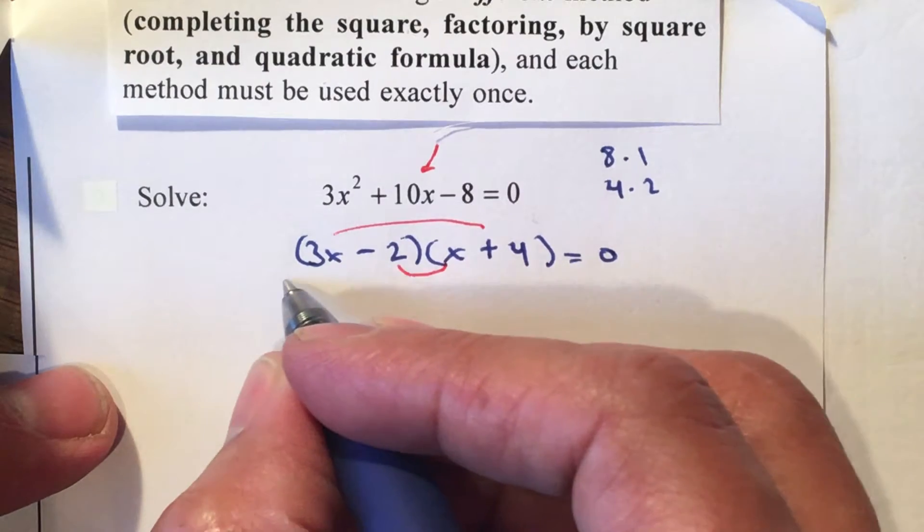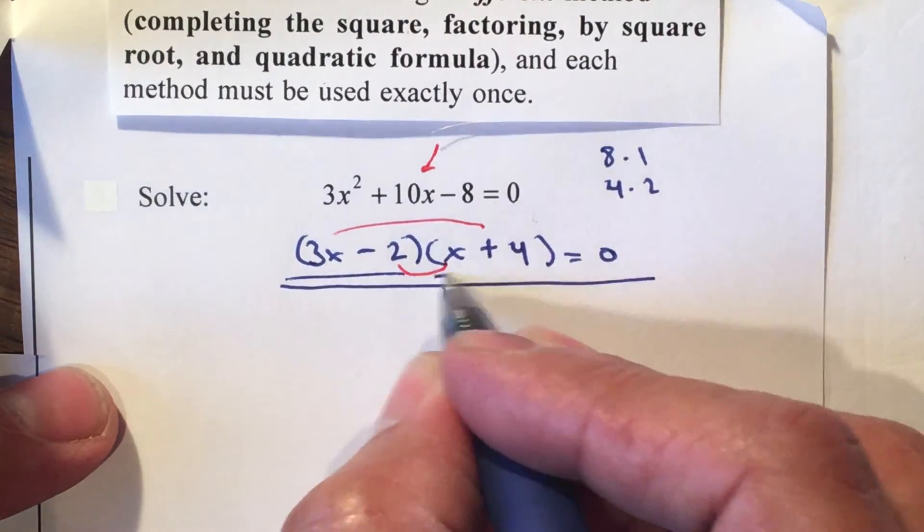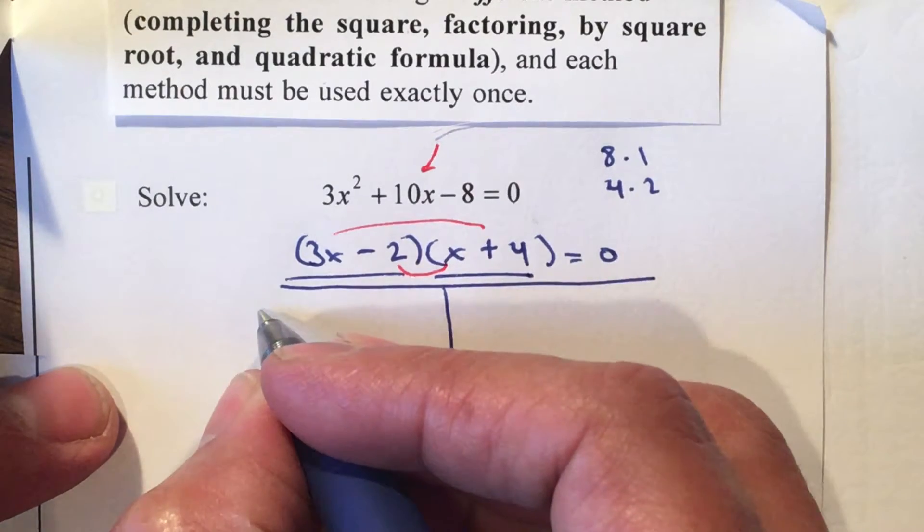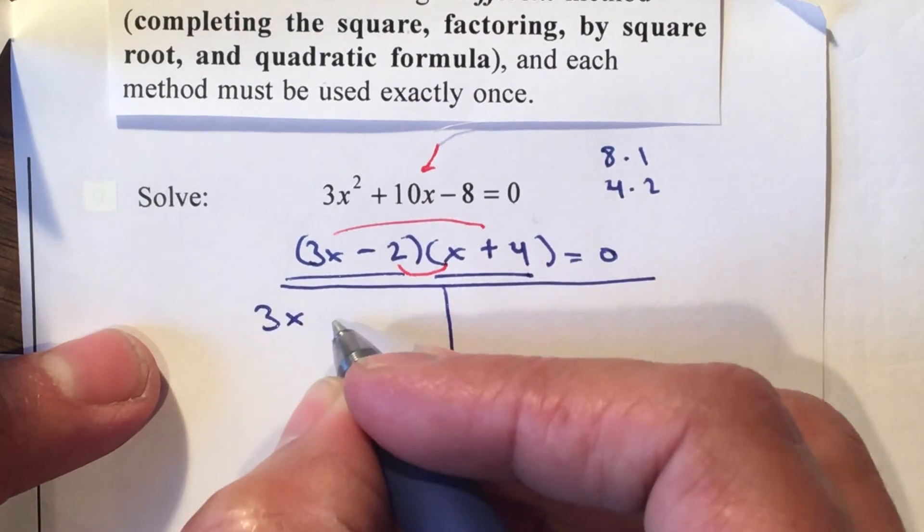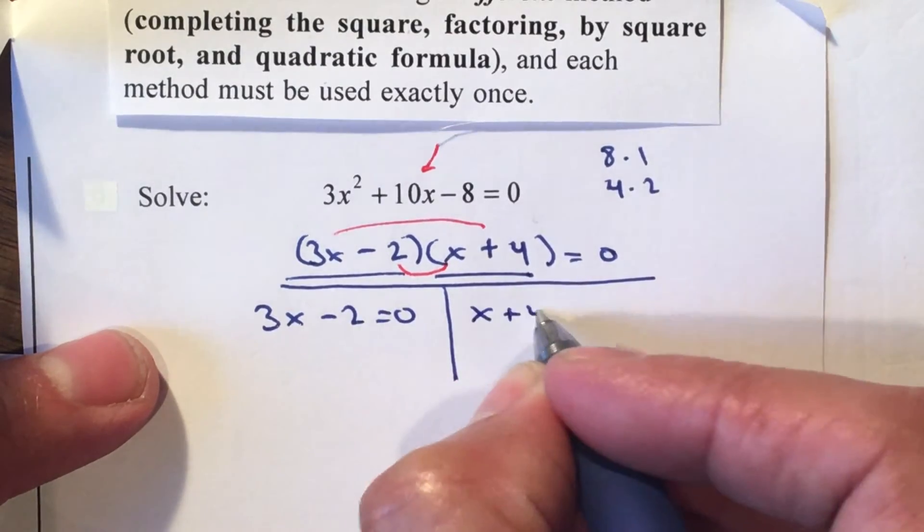Now that I factored it, I'm gonna use my zero product property. I know that they're multiplying and they're equal to 0, so one or both should be 0. Either 3x minus 2 should be 0, or x plus 4 should be 0.